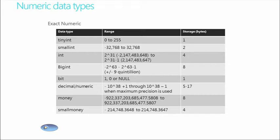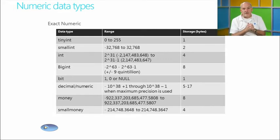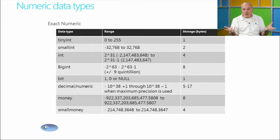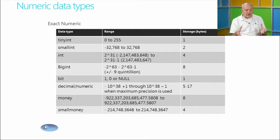For exact numbers, we have TinyInt (0 to 255, one byte), SmallInt (up to 32,768, two bytes), Integer, and BigInt (up to quintillion). We also have Bit (returns 1, 0, or null), Decimal/Numeric for precision, and Money/SmallMoney. These are the exact numeric types.